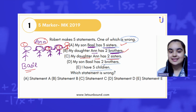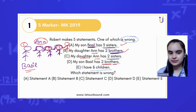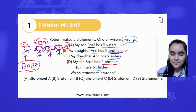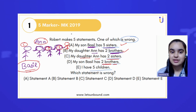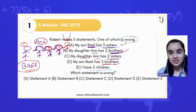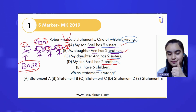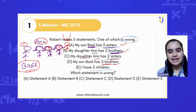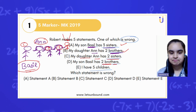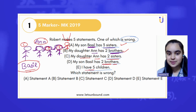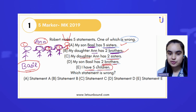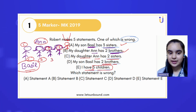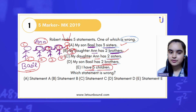Statement four: my son Basil has two brothers. Now here is Basil — Basil should have only one brother. There is no other brother, because we have only one boy left, and that can be his brother. The last statement is I have five children — that is true: one, two, three, four, five children.